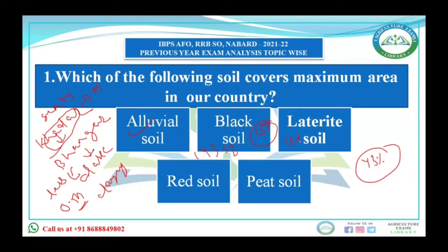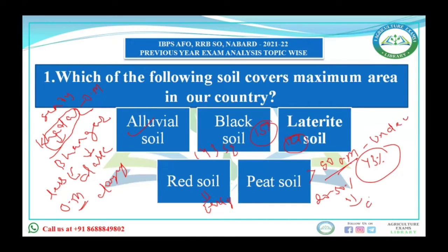Laterite soil accounts for about 12 percent of Indian soils. Red soil is seen mainly in areas where rainfall is low and is also known as arid soil. Red soil color is related to the presence of iron oxide. Peat soil is found mainly in Kerala and is known as Kari. There are two types: peat soil and muck soil. In peat soil, organic matter is more than 50 percent, while in muck soil it is 20 to 50 percent. In peat soil the organic matter is undecomposed, while in muck soil it is decomposed, making muck soil more fertile.